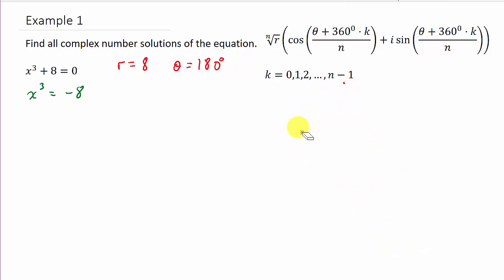Now this is going to be for k equals 0, 1, 2. Now, how do I get that? Well, in this problem, n is 3. So we're going to have 3 solutions here. n is 3. And so if I plug the 3 into here, 3 minus 1 is 2. So I'm going to go 0, 1, to 2. Alright.